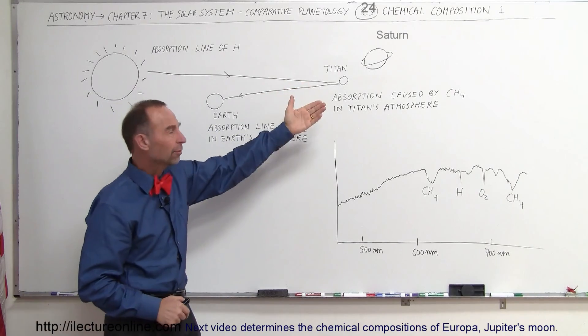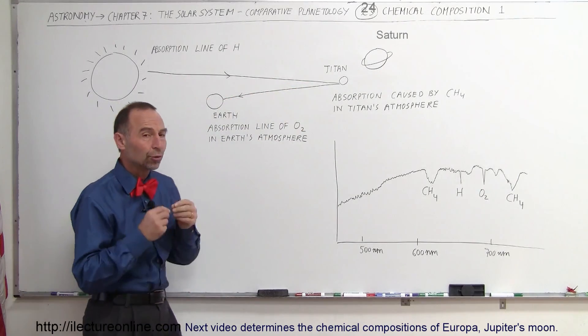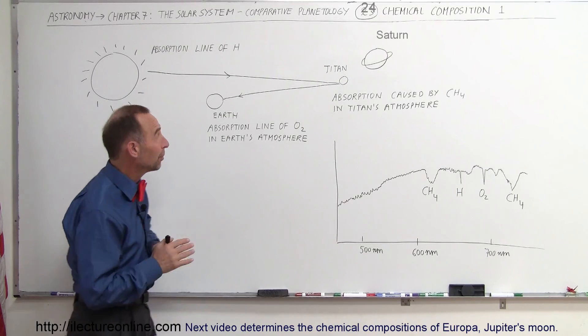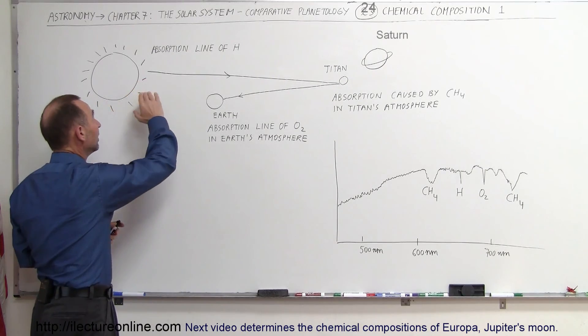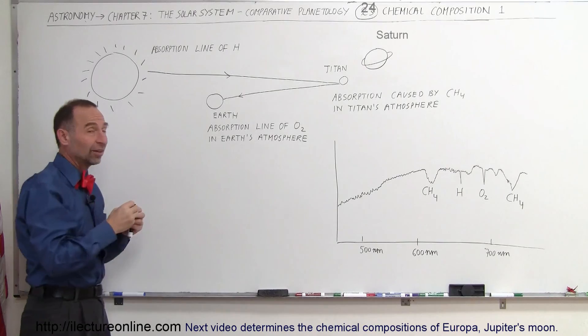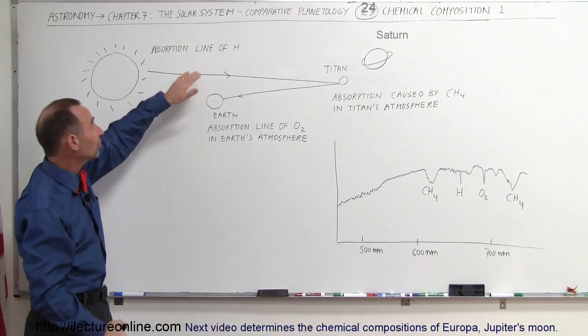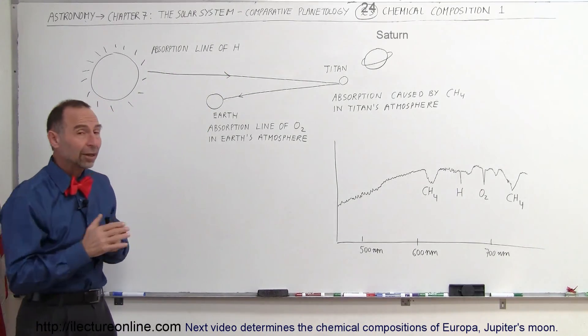The light is partially absorbed, partially reflected, and when the light is reflected back to the Earth, we observe it on the Earth. But we have to remember that the light came from the sun, and we have to deal with the fact that the sun has a number of absorption lines, especially the very strong line of hydrogen.